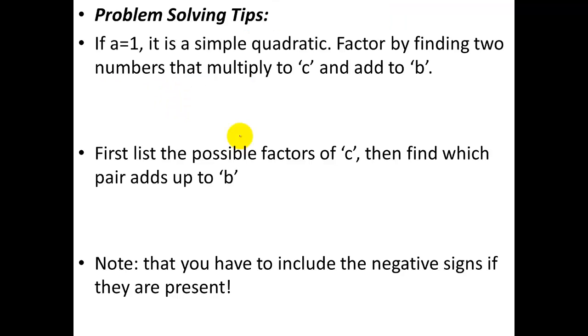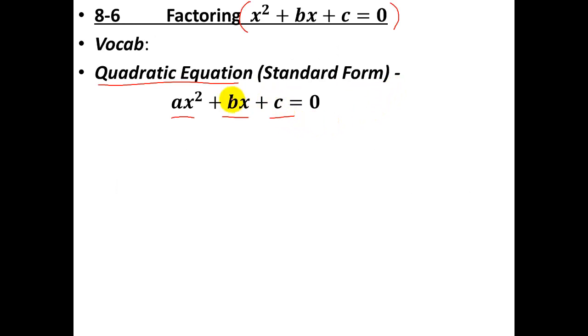So how do we do it? Well, if a equals 1, it's called a simple quadratic. We can factor by finding two numbers that multiply to c and add to b. Let me go back a slide. Here's the b value, and here's the c value. So we want to find two numbers that add to this and multiply to this.